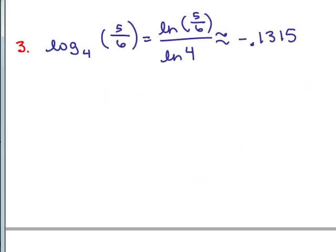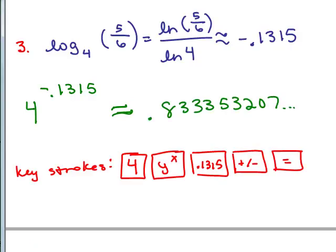And finally, let's check number 3. So let's do 4 to the negative 0.1315. We want to see if that's going to be about 5 sixths. So remember 5 sixths is about 0.8333. So let's see if we're going to put that in the calculator. And using my calculator, I came up with 0.833333, and that is close to 5 sixths.